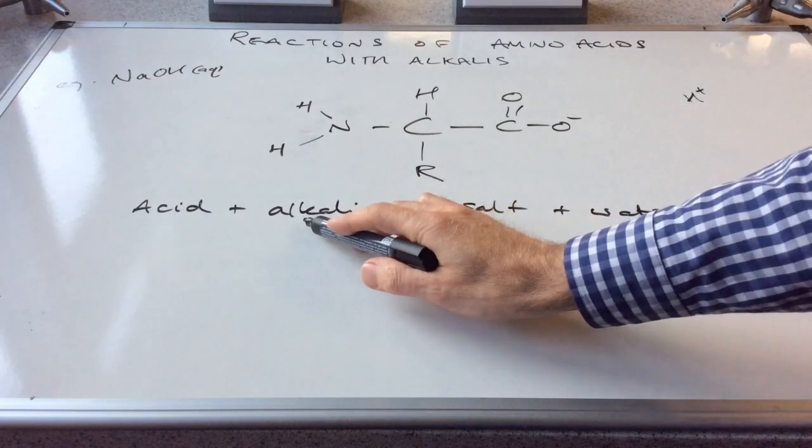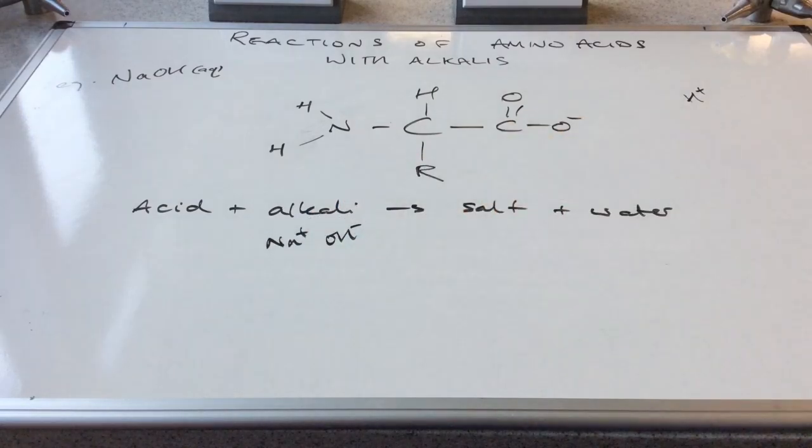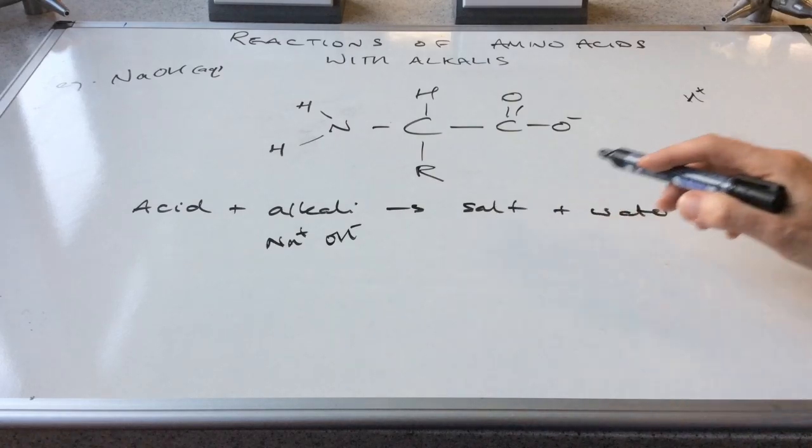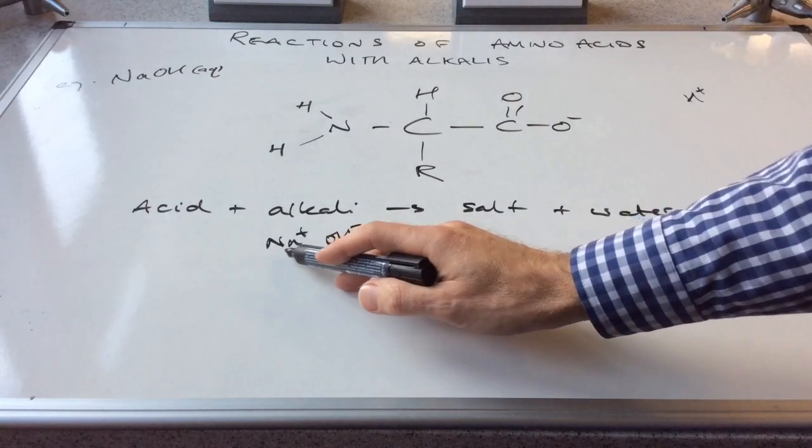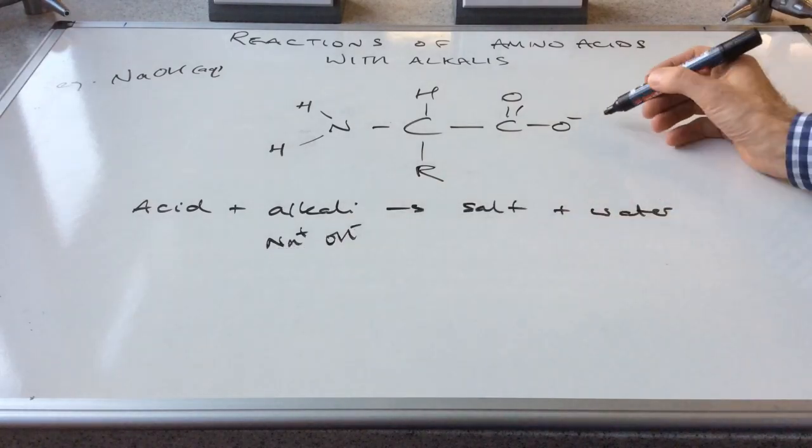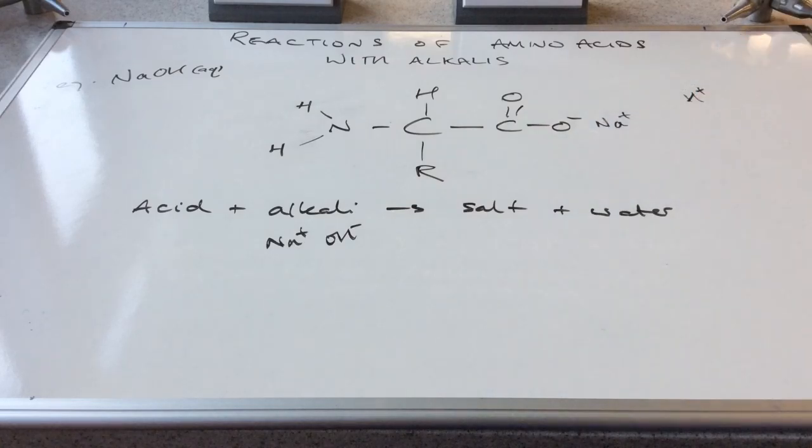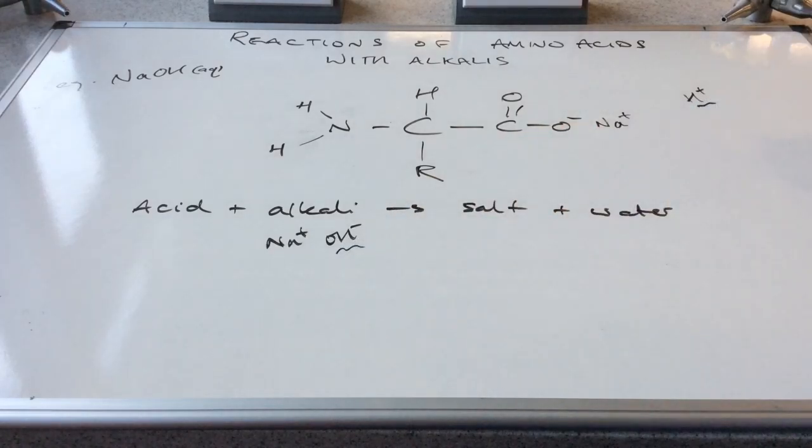So what have we got in the alkali? Well, we've got the sodium ion and the hydroxide ion. So remember salt. We've just defined salt when the H+ ion of an acid is replaced by a metal ion or an ammonium ion. Well, it's a metal ion in this case. And so we get this salt here. And hopefully you can appreciate that this hydroxide ion and this H+ ion will actually combine to form a water molecule.